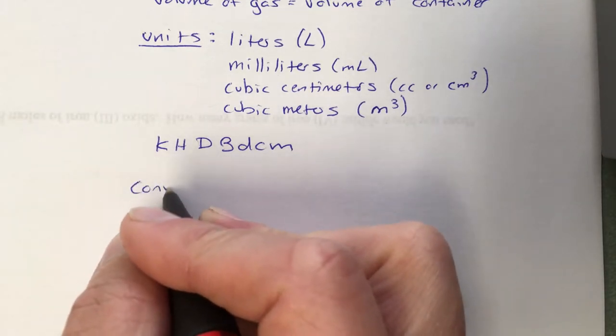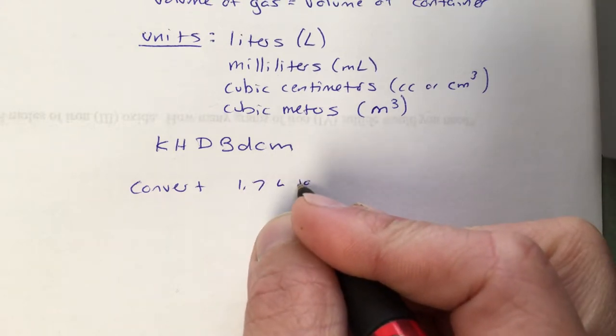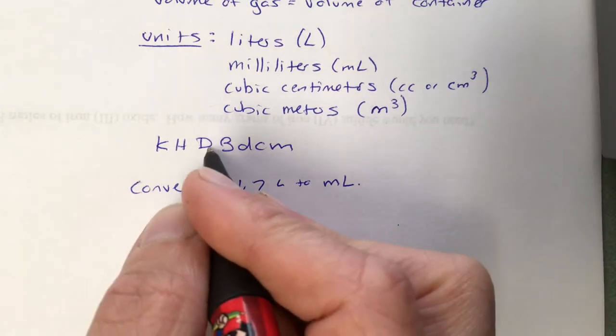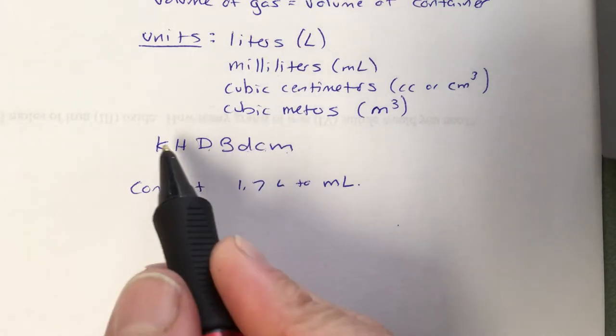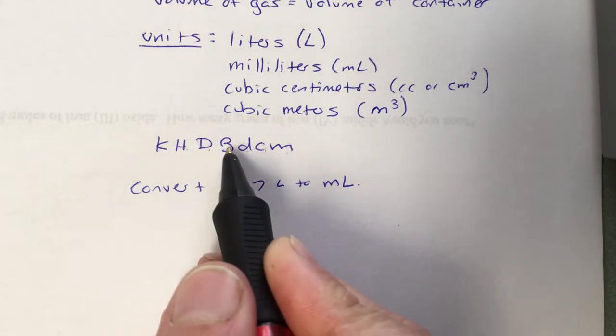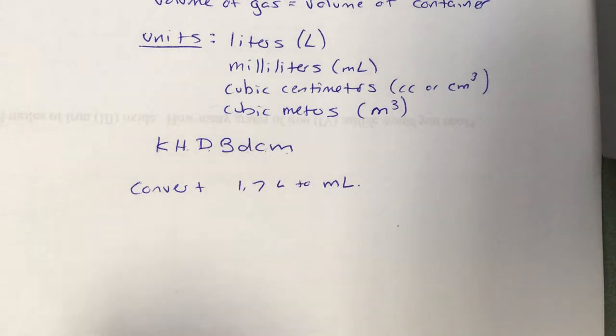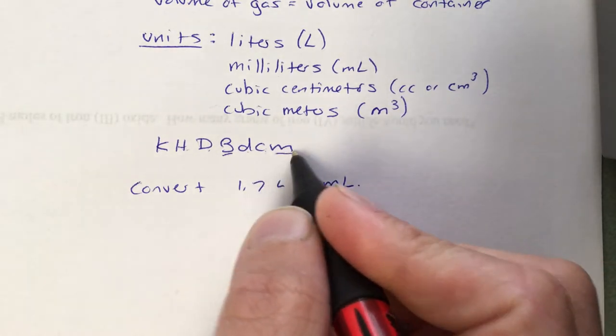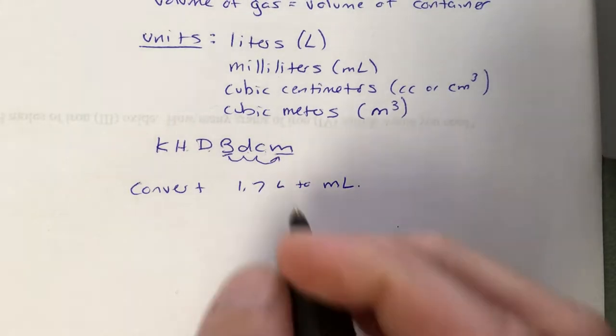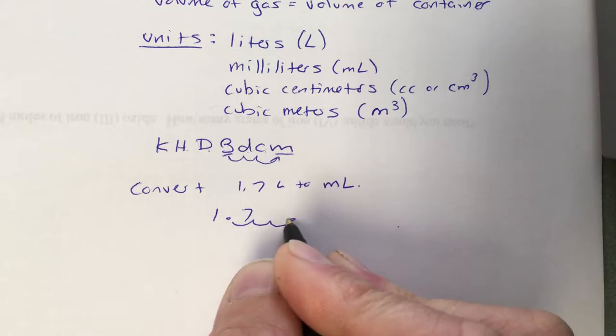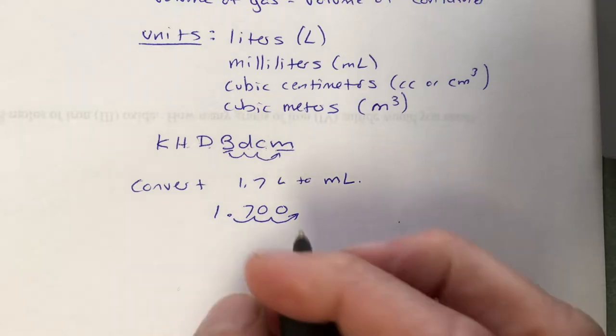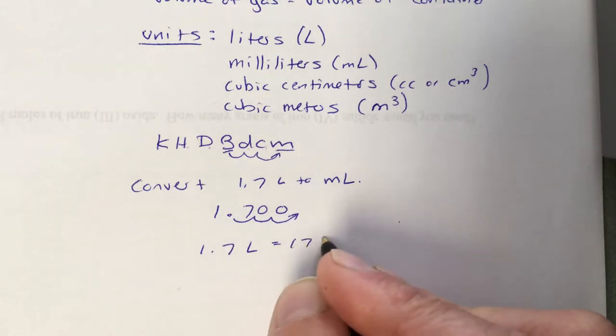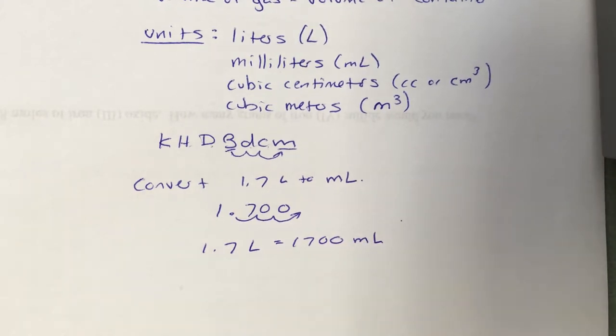Converting between these units is a matter of metric conversion. That's your King Henry died by drinking chocolate milk. If I wanted you to convert between these volume units, all you have to know is the prefixes, where you're starting and where you're going. So if you had to convert 1.7 liters to milliliters, all you'd have to know is it's kilo-hecta-deca, base unit, deci-centi-milli. Liter is a base unit, so we're starting here. We're going to milli, which is over here. One, two, three places over to the right. Take the decimal point, move it one, two, three places over to the right. Fill those empty place values with zeros. And we can say 1.7 liters equals 1,700 milliliters. Again, just a basic metric conversion.